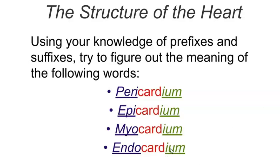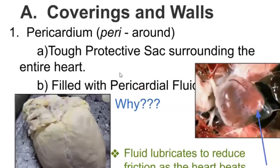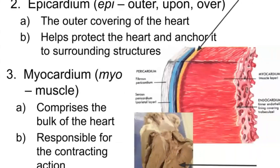Here's the pericardium — you can see how the sac is pulled away and the heart is inside it. The pericardium is filled with pericardial fluid. Most of our fluids serve to reduce friction. The heart is a muscle that's constantly beating — expanding and getting smaller. Without lubrication it would be hard for it to open and close, kind of like the hearts you were handling in the lab.